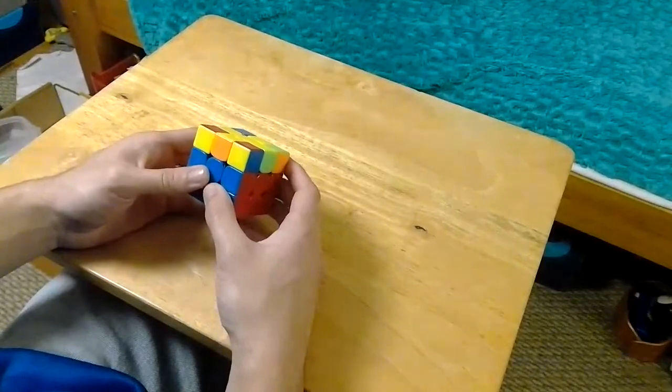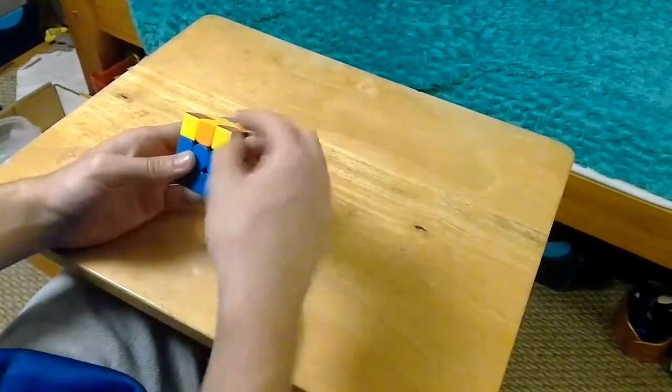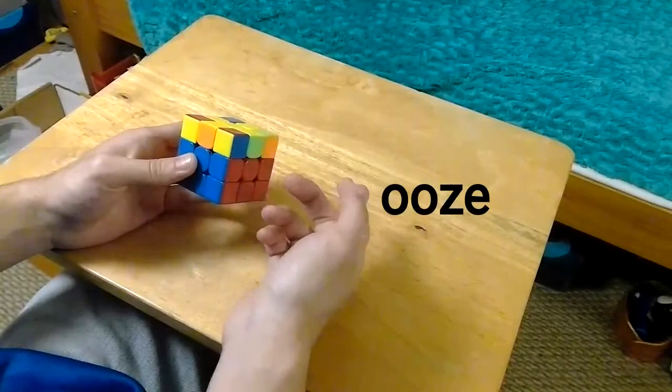For all of these, I just imagine that the corner is twisted correctly. This is just a zebra with a U-move, so U Z or Ooze.